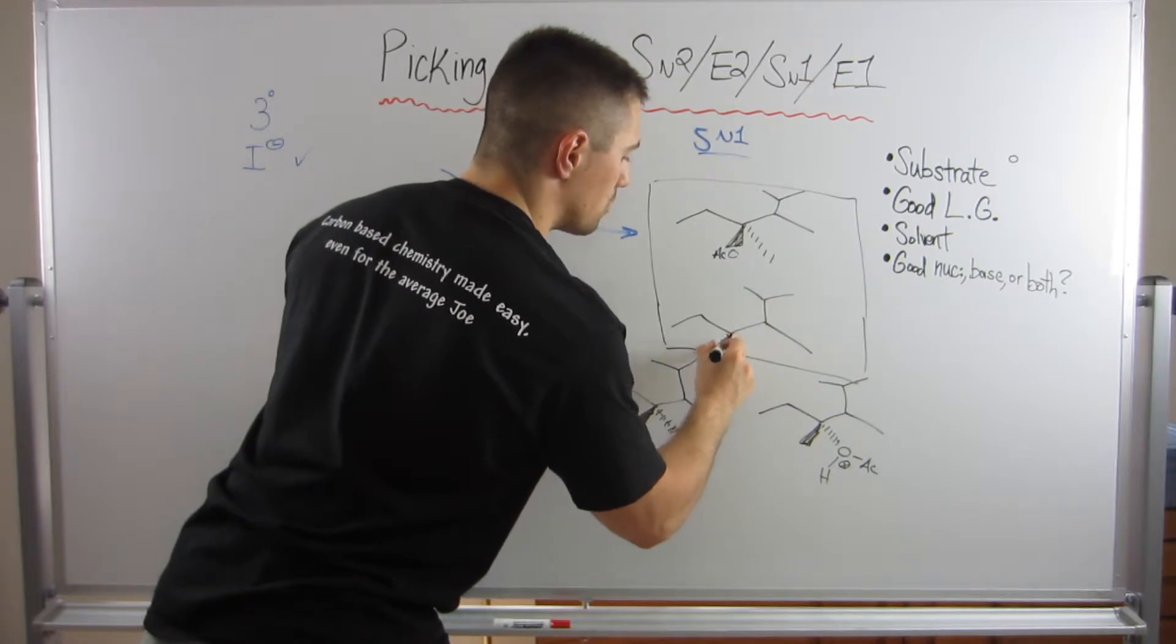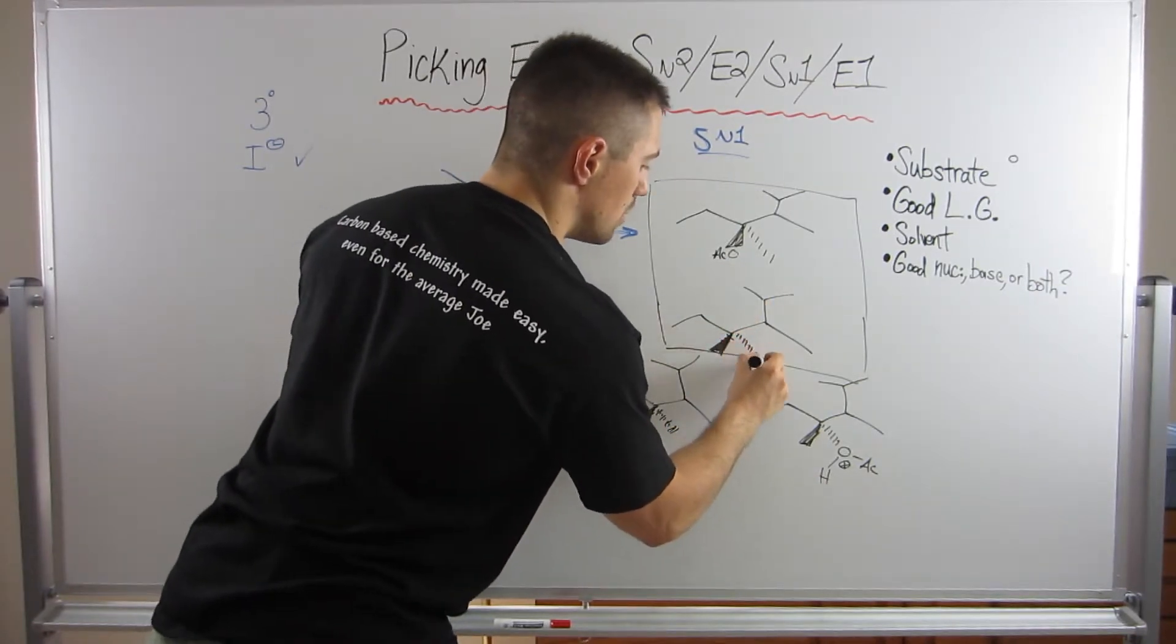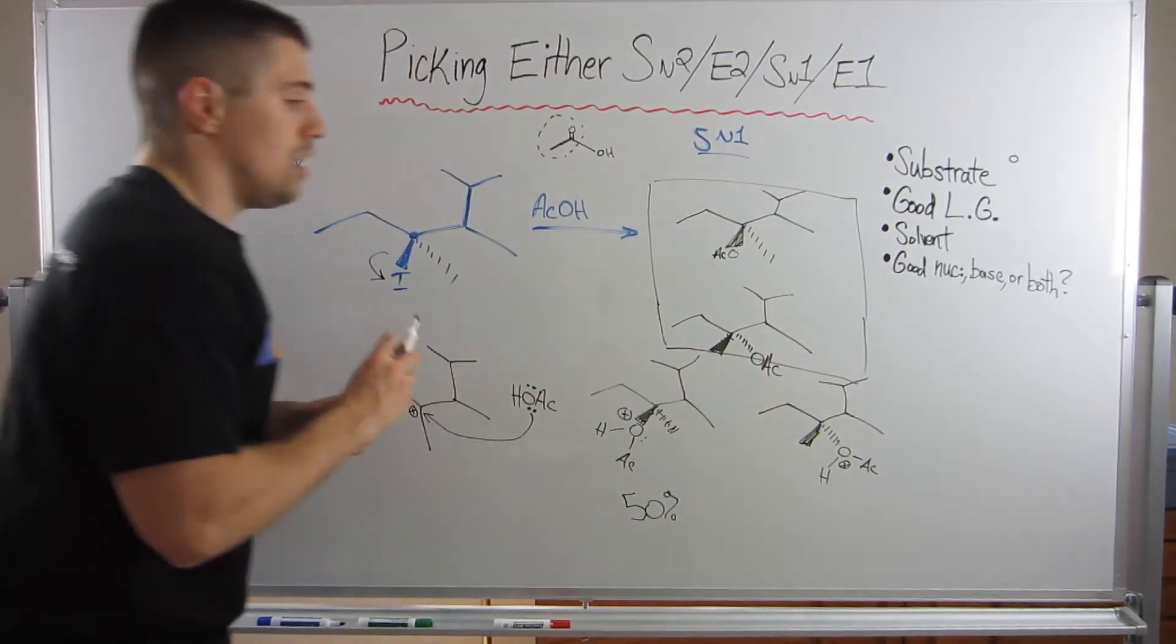You could just draw the wedged methyl group. You just switch these. And then the dashed OAC.